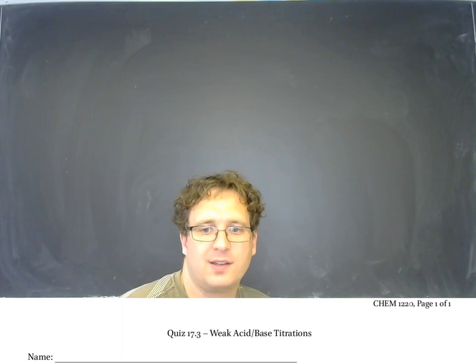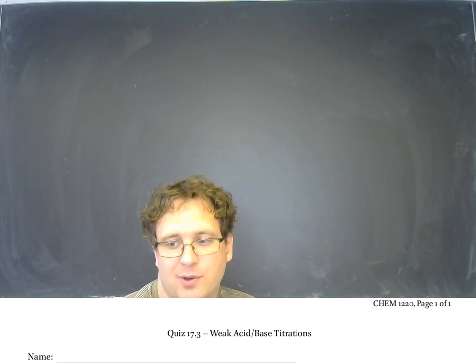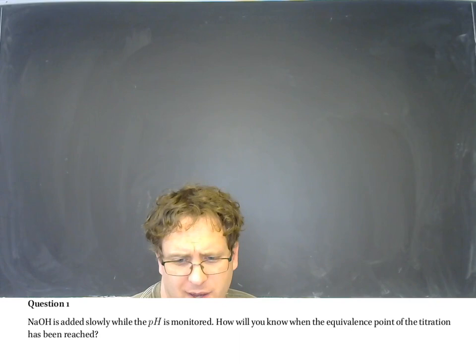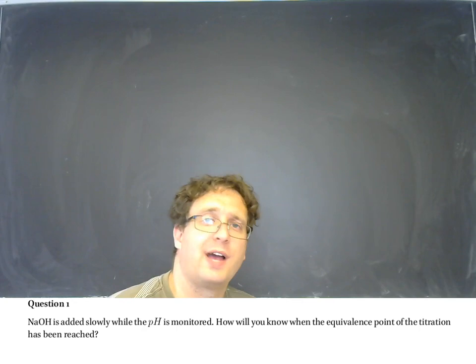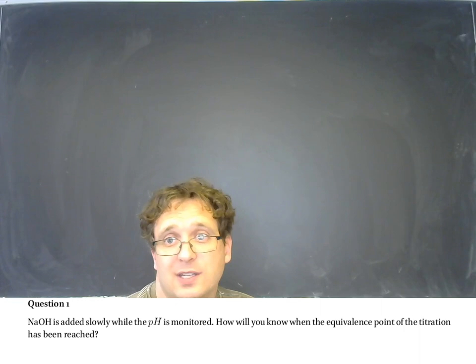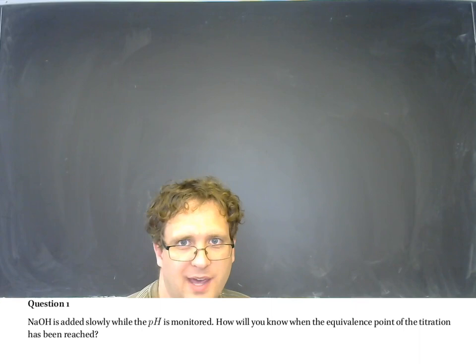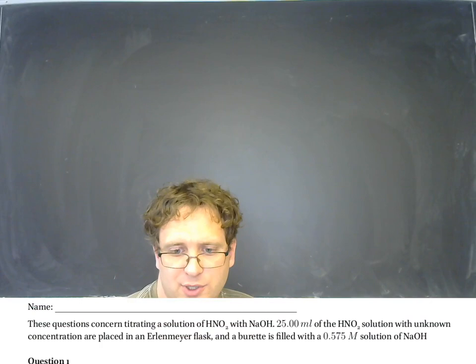Quiz 17.3 is going to be in many respects exactly like 17.2. This time we have a weak acid and we're titrating with sodium hydroxide. For the first question, if you add NaOH slowly and monitor the pH, you'll know where the equivalence point has been reached because it will be the point where the pH is rising most sharply. Unlike the last quiz, we cannot depend on that happening at a pH equal to 7, but it still will be where the rise is most sharp.